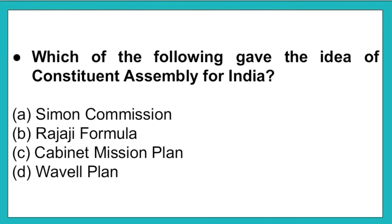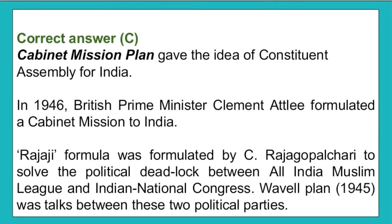The next question: Which of the following gave the idea of the constitution assembly for India? Option A: Simon Commission. Option B: Rajaji Formula. Option C: Cabinet Mission Plan. Option D: Wavell Plan. The correct answer is option C, that is the cabinet mission plan gave the idea of the constitution assembly for India. In 1946, British Prime Minister Clement Attlee formulated a cabinet mission to India. The Rajaji Formula was formulated by C. Rajagopalachari to solve the political deadlock between the All India Muslim League and the Indian National Congress.